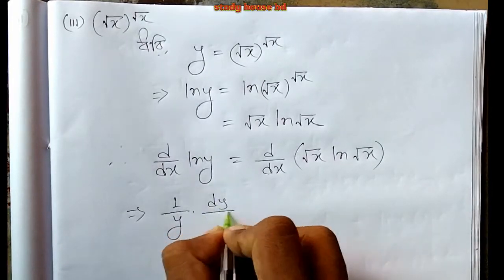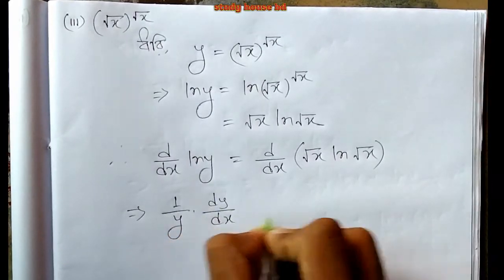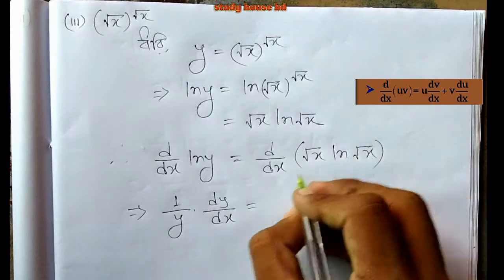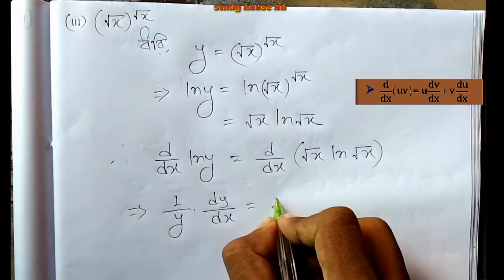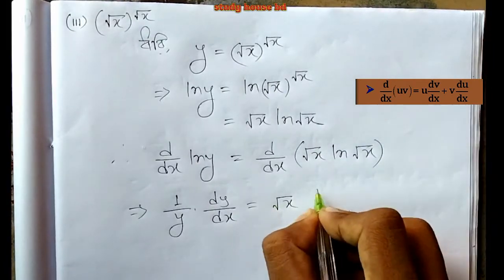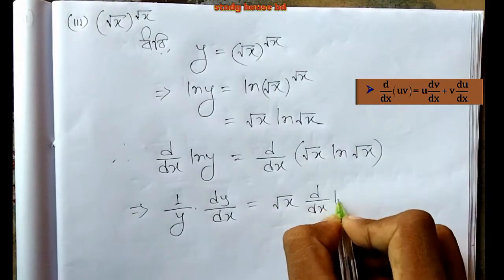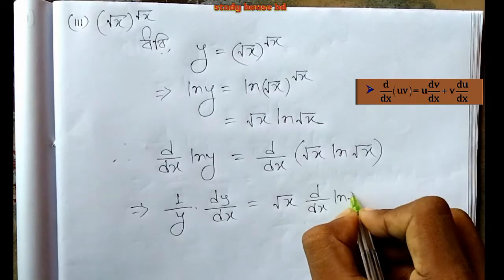On the left side, 1/y times dy/dx. On the right side, we apply the product rule, taking u equals root x and v equals ln(root x), then differentiating.